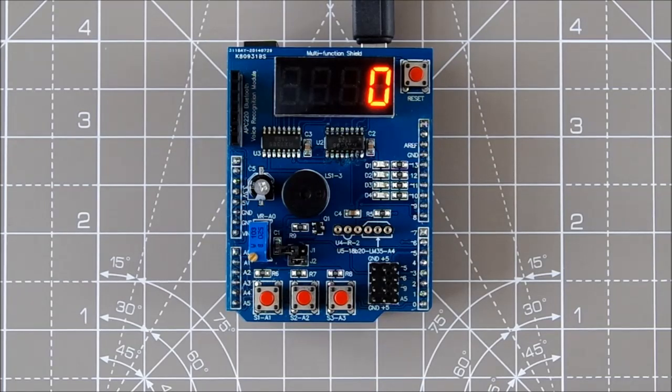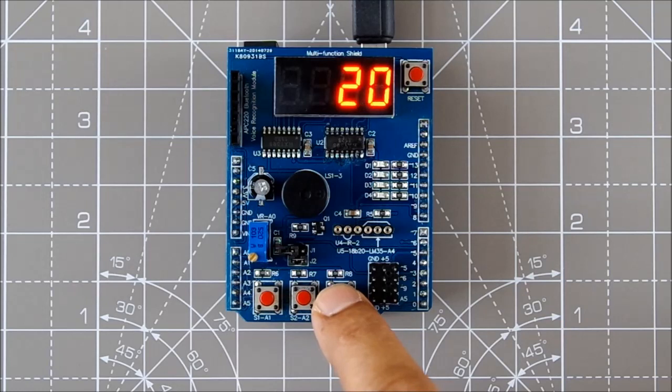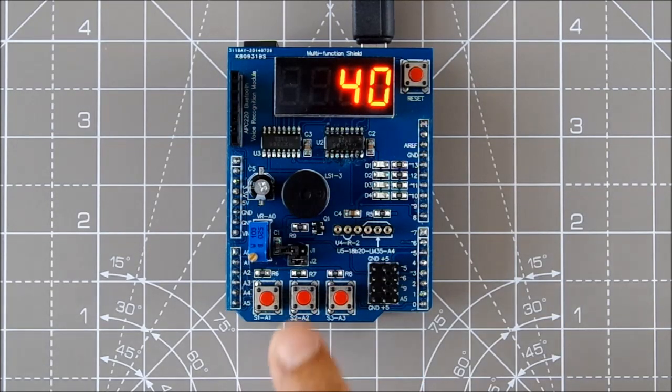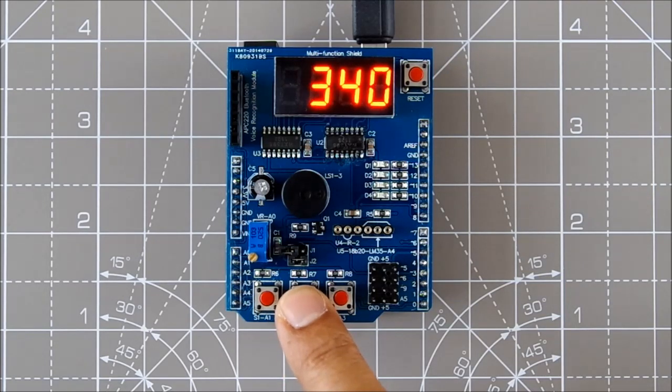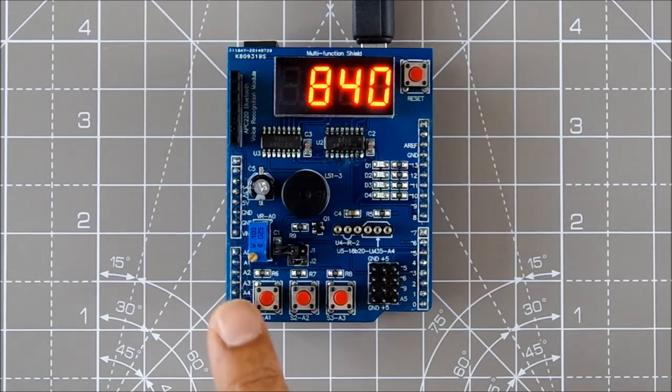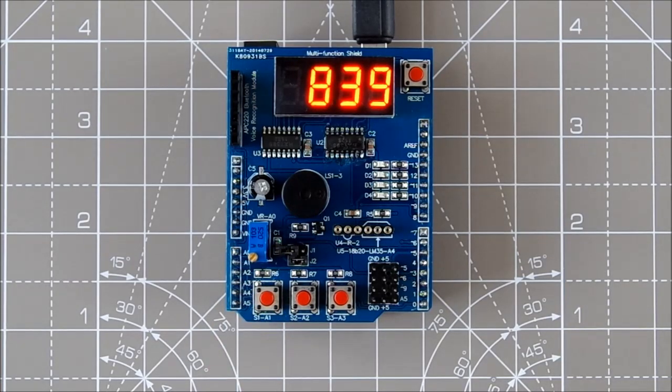To set the countdown timer, we use button three to set the seconds and button two to set the minutes. Then you just press button one and it starts counting down. Here it's going to count down from eight minutes and 40 seconds. Press button one again to stop the timer.